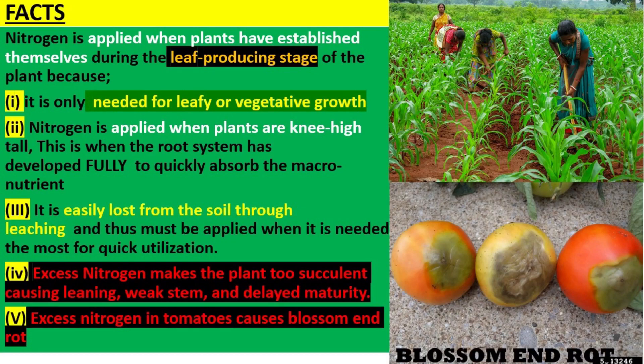Facts: Nitrogen is applied when plants have established themselves during the leaf-producing stage because it is needed for leafy or vegetative growth. It is applied when plants are knee-high tall — this is when the root system has developed well to quickly absorb the macronutrient. Application of nitrogen to plants is called topdressing.